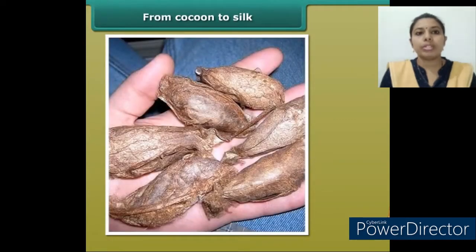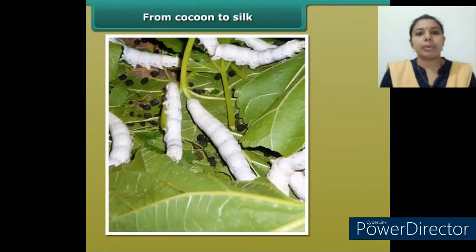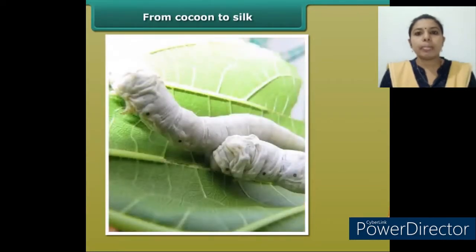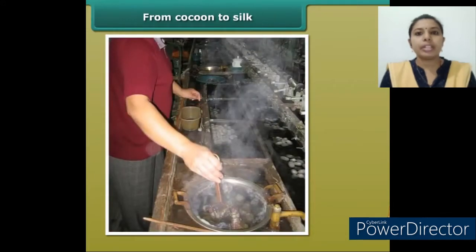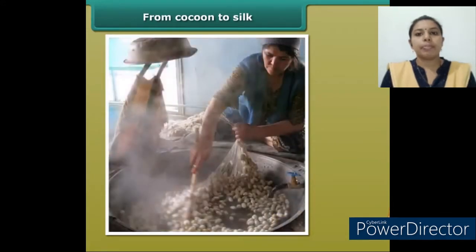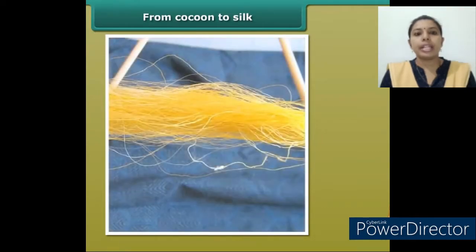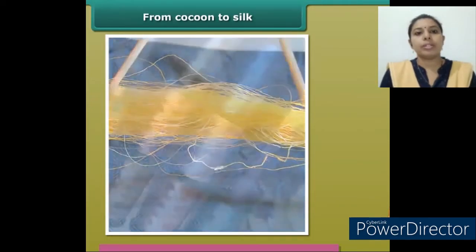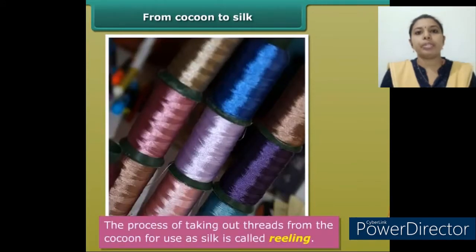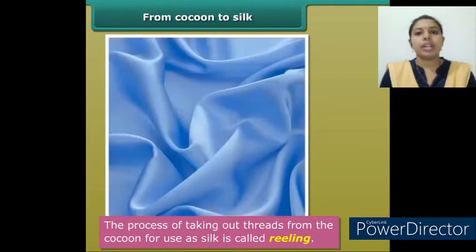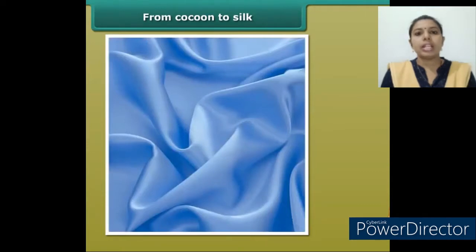Silk is processed from cocoons once the silkworms spin a protective cocoon around themselves. These cocoons are boiled in hot water to separate the silk fiber from the cocoons. Each cocoon is made of one single silk thread. The trick is to locate one end of the thread, then it's easy to unwind the thread from the cocoon. The process of taking out thread from the cocoon for use as silk is called reeling. These silk threads are then used to manufacture silk fabric.